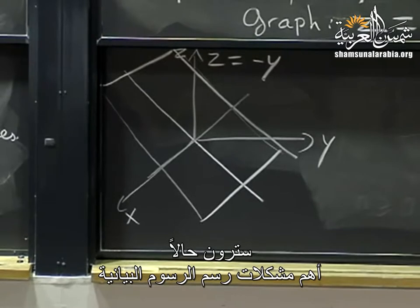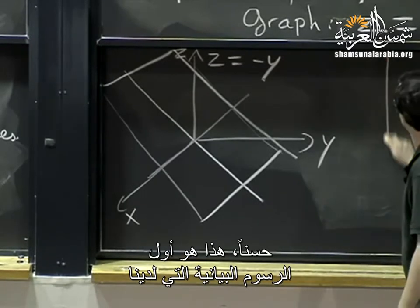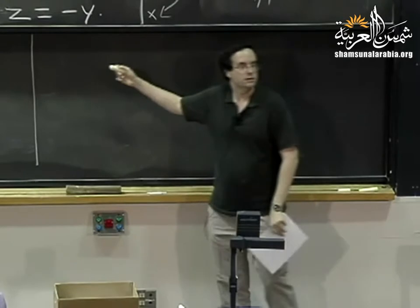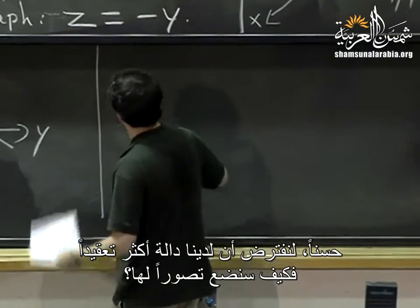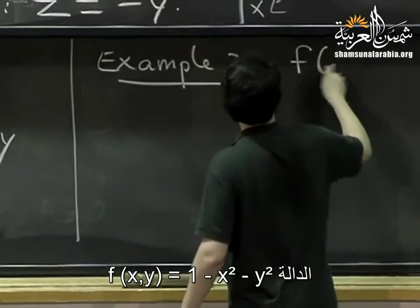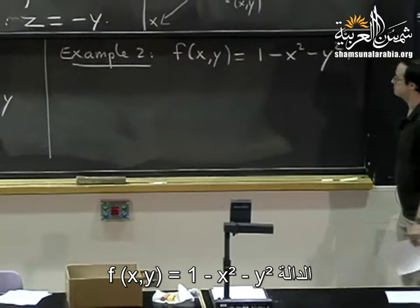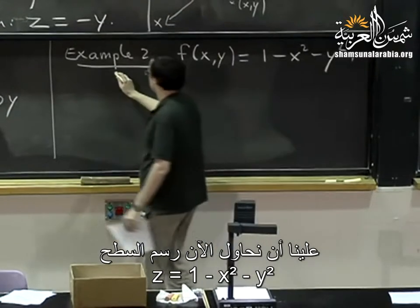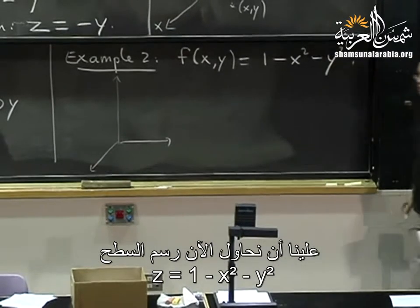You can see immediately what the big problem with graphs will be: these pictures are hard to read. So let's do another example. Let's say f of x, y equals one minus x squared minus y squared. We should try to picture what the surface z equals one minus x squared minus y squared looks like.